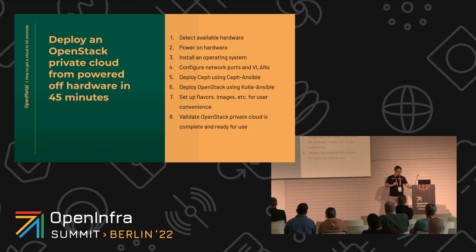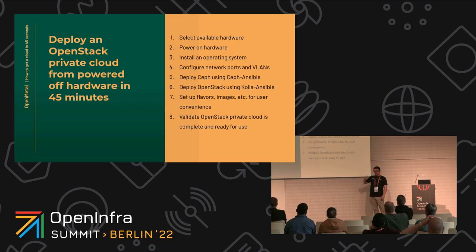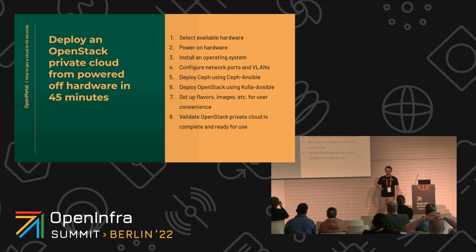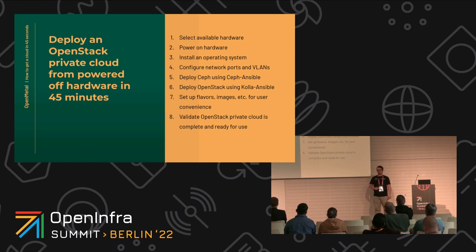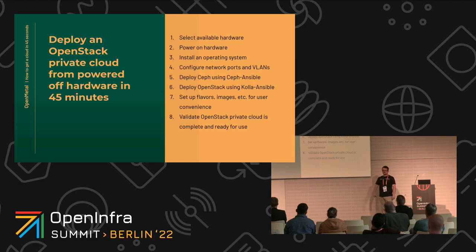The longer 45-minute journey — that is the real magic. This is what really sets our platform apart. These are the main critical steps: we find hardware that matches what the user has requested, we power the hardware on using OpenStack Bifrost to manage the hardware, we install the operating system, we configure networking — setting up switch ports on demand and VLANs dynamically to isolate that cloud's traffic. Then we deploy Ceph using Ceph Ansible, which takes care of getting the Ceph monitors, Ceph managers, and OSDs — all of that configuration ready to go.